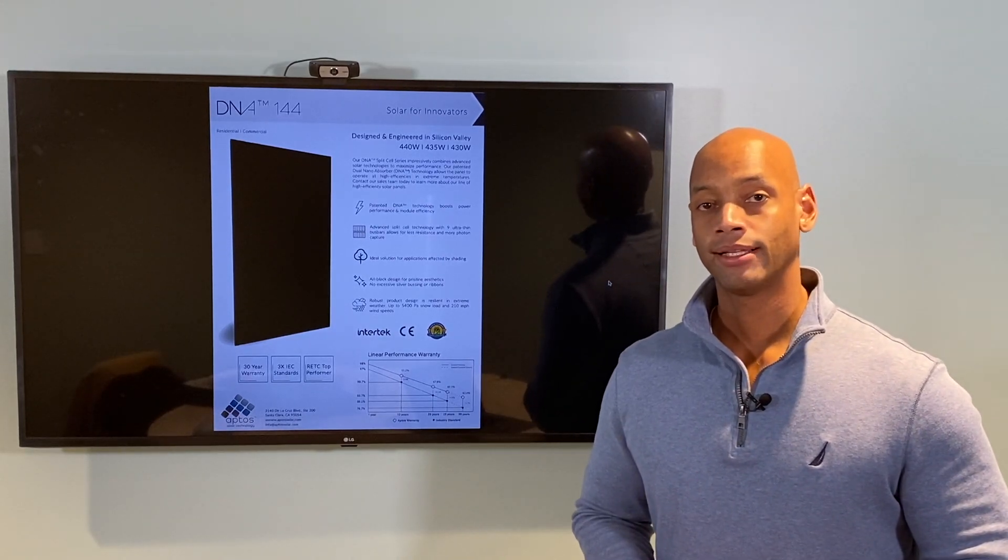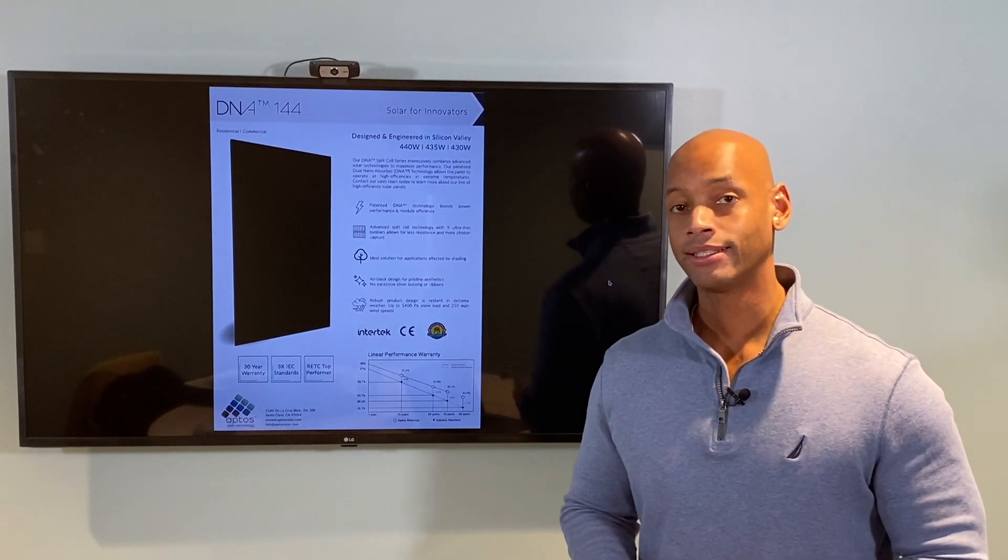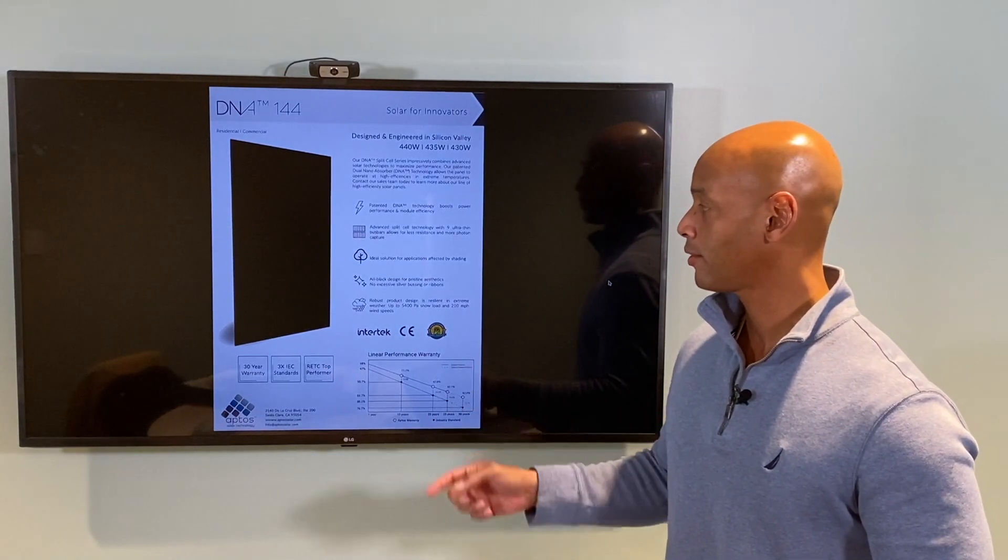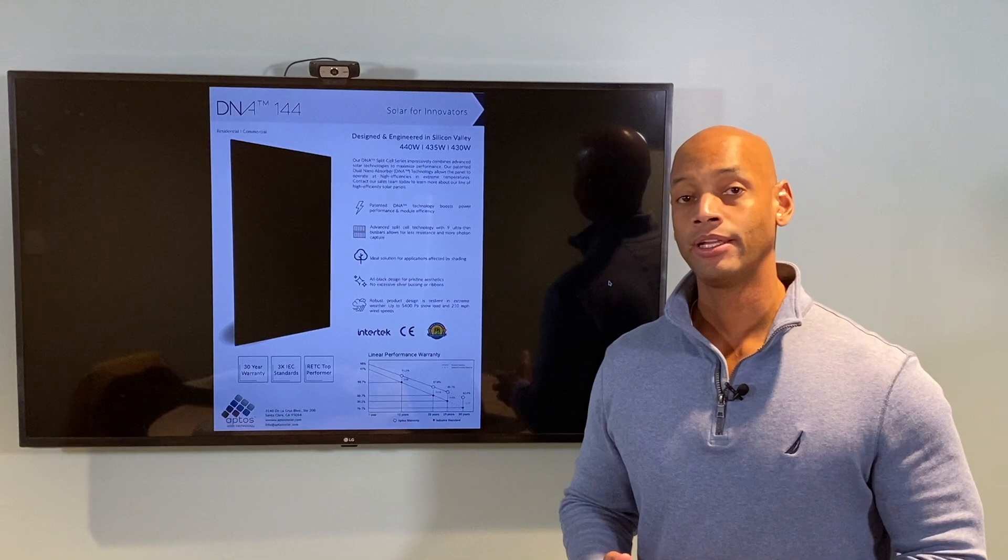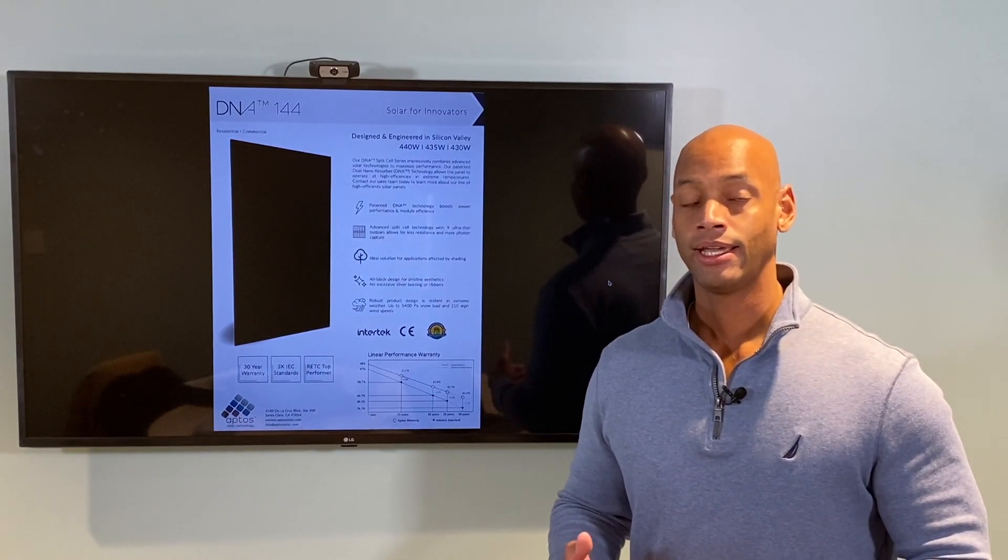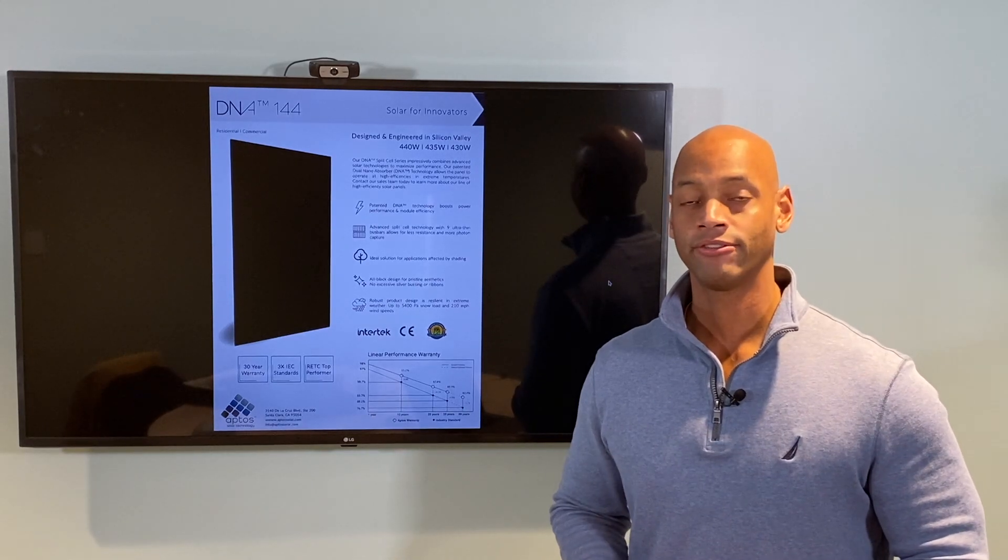If you're evaluating solar panel options for your home, you're going to want to take a look at the new Aptos 440 watt DNA solar panel. This is an American engineered all-black panel designed for extreme weather conditions and coming in at a very competitive price point.